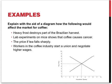Finally, suppose workers in the coffee industry start a union and negotiate higher wages. Such an increase in the cost of inputs will increase the cost of production. The result is that less will be supplied at every price and the whole supply curve moves to the left. The end result is an increase in the equilibrium price and a decrease in the equilibrium quantity.